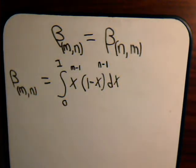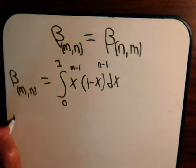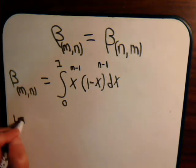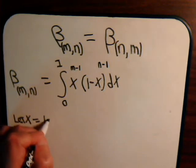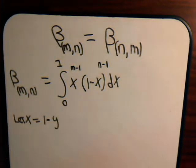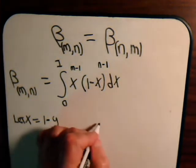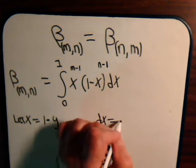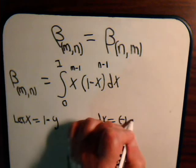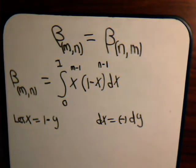So there's the basic definition of the beta function. Now, let's just do a simple variable change. Suppose we say let x equal 1 minus y. Then dx, that's just going to be minus dy.